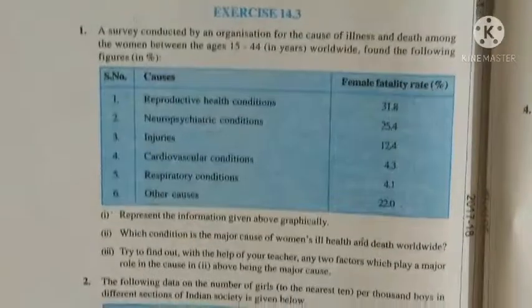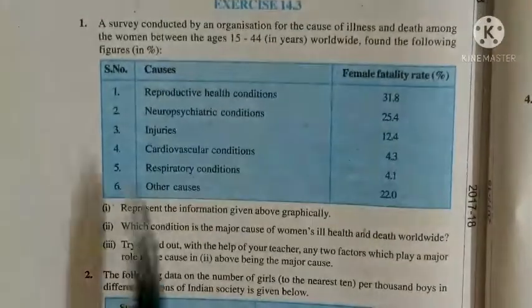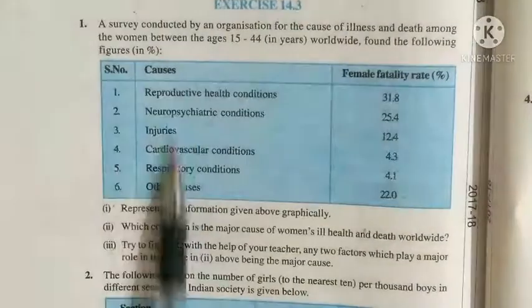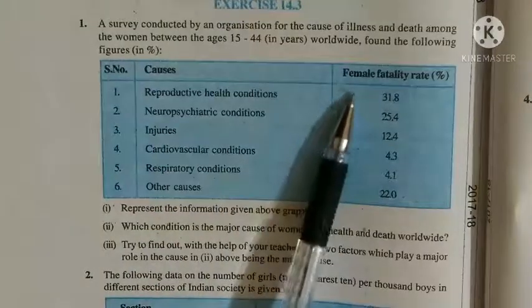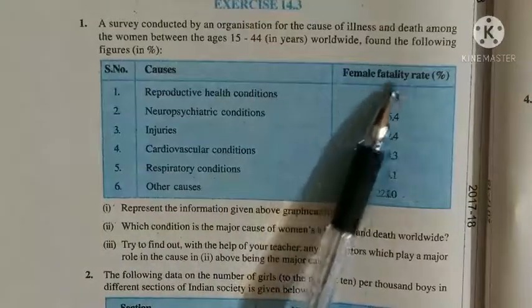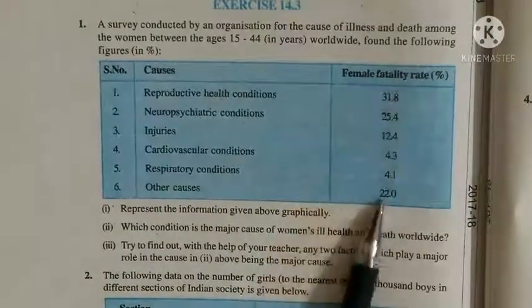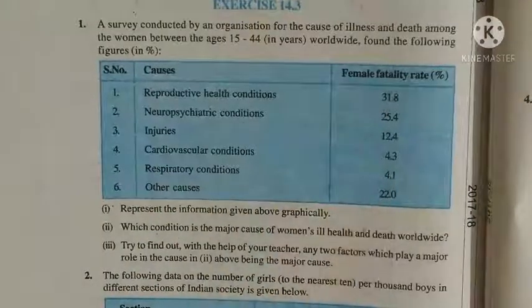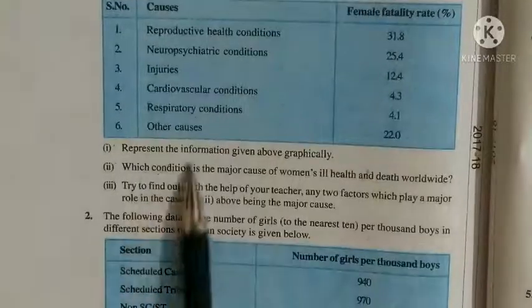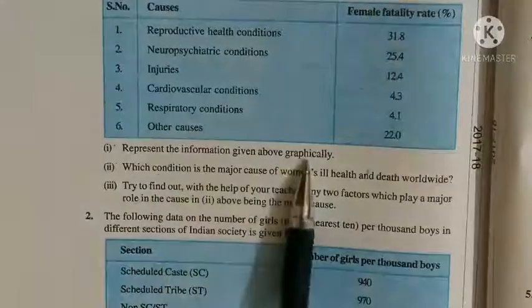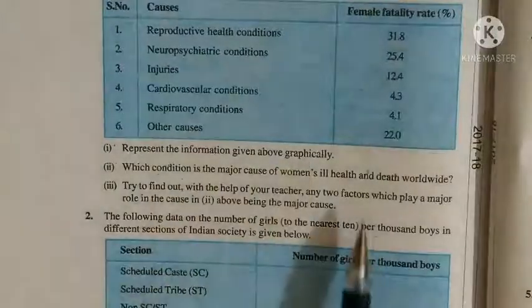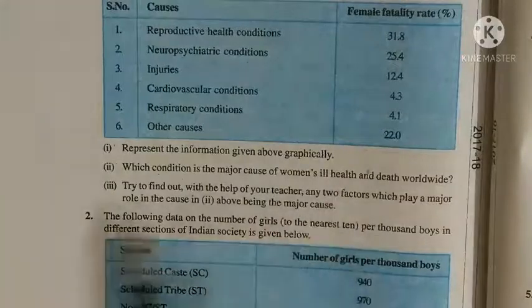Percent में दिया हुआ है, आप देख सकते हैं. यहाँ causes दिये हुए हैं और यह female fatality rate दिया हुआ है percent में. इसे हमें graphically represent करना है.